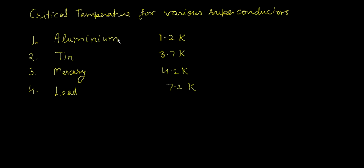Some examples of critical temperatures: for aluminium the critical temperature is 1.2 Kelvin, for tin it is 3.7 Kelvin, for Mercury it is 4.2 Kelvin, and for lead it is 7.2 Kelvin. So four different materials have different critical temperatures at which the resistivity becomes zero and they exhibit the superconducting nature.